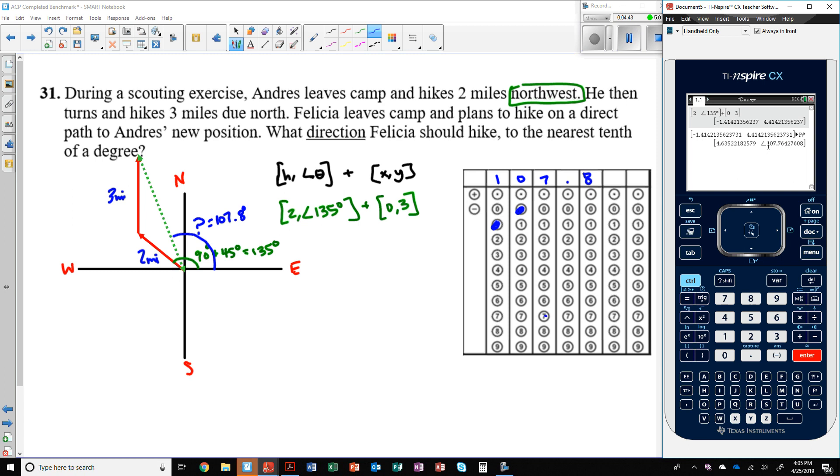Now, sometimes when we come to problems like these, there might be multiple choice, and it might have the answers listed in between two quadrants. Since this is in between north and west, you would say north something degrees west.